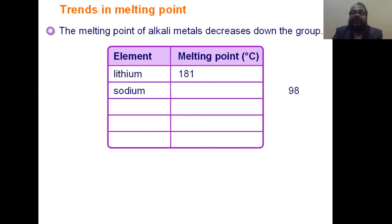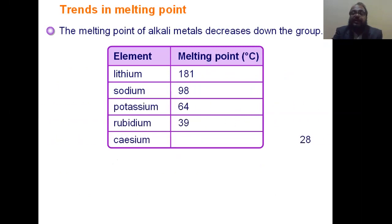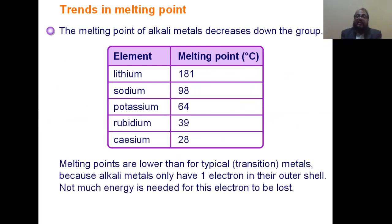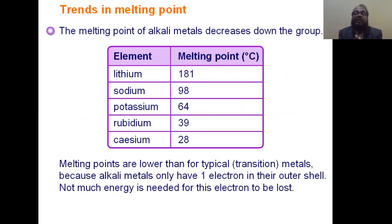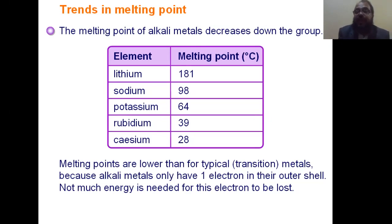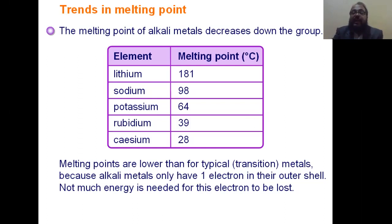The trend in melting point: melting point is decreasing from top to bottom. Lithium has a high melting point, and sodium, potassium, and rubidium have progressively lower melting points. The reason is that the binding force decreases from top to bottom. Lithium atoms have a high binding force, giving it a high melting point. Sodium has more binding force than potassium, and potassium more than rubidium and cesium. So melting point decreases from top to bottom as binding force decreases.